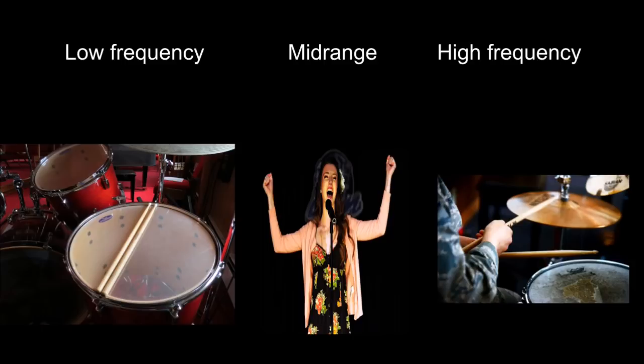For example, the bass guitar is about 40Hz — that's a low-frequency. We know the vocals and humans cover a range. The bass sound is in the low end. The bass is low, and the bass range is low.